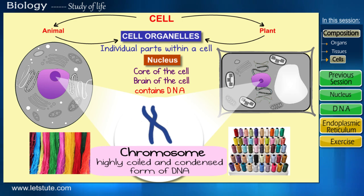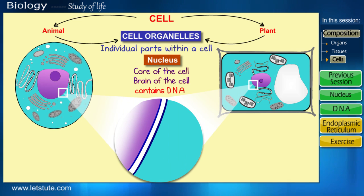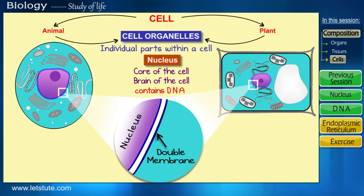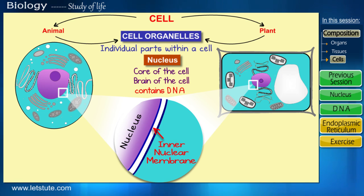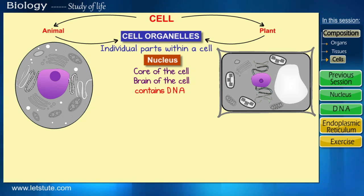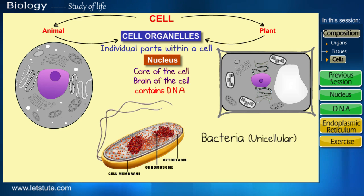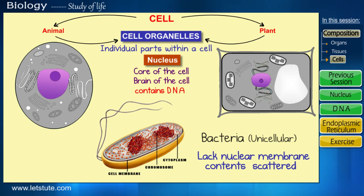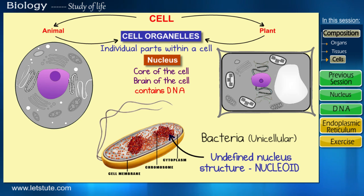All these contents are fit into a nucleus by a double covering or membrane around the nucleus. Since it is present around the nucleus, it is called the nuclear membrane — it can be an inner nuclear membrane and an outer nuclear membrane. As a quick fact, some organisms like bacteria lack this nuclear membrane, and the contents of the nucleus are therefore scattered and not bound together, so the nucleus won't have a definite shape. Such an undefined nucleus structure is called a nucleoid.